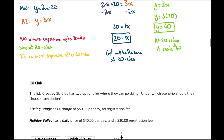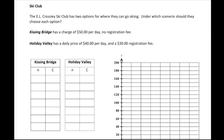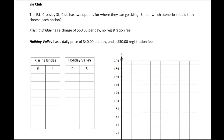Let's look at another scenario and go through the same three different methods. The Crosley Ski Club has two options: Kissing Bridge has a charge of $50 per day with no registration fee, so the equation is y equals 50x. Holiday Valley has a daily price of $40 and a registration fee of $30, so the equation is y equals 40x plus 30.